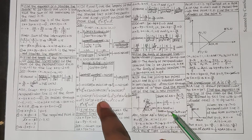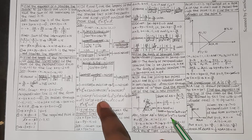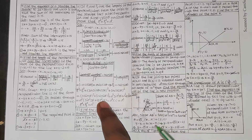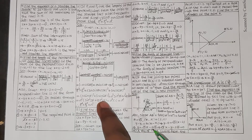The slope of the new line AB' after rotating 15 degrees anticlockwise: the new angle is 45 plus 15 equals 60 degrees. So slope of AB' equals tan 60 degrees equals root 3, giving M equals root 3. Using the point-slope form with point A at 2 comma 0: y minus 0 equals root 3 times x minus 2. So y equals root 3 x minus 2 root 3, which gives root 3 x minus y minus 2 root 3 equals 0 as the required equation.